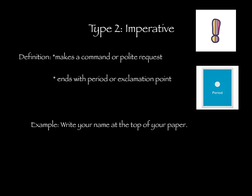Mr. Geiselman, an imperative sentence makes a command or a polite request. A polite request can start with a word such as please. The sentence ends with a period or an exclamation point depending on what is being said. The example that we have for you is: write your name on the top of this paper.